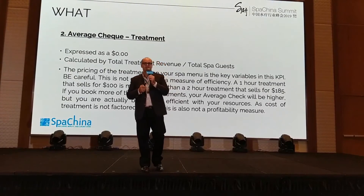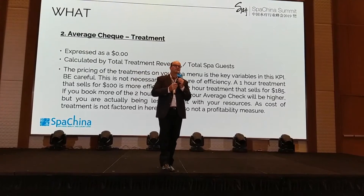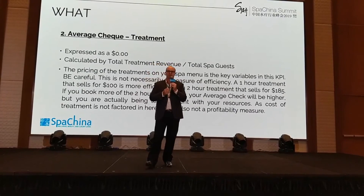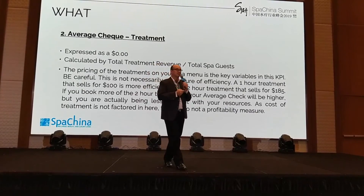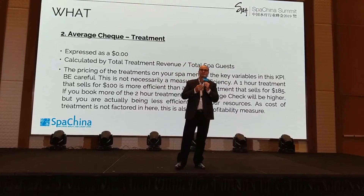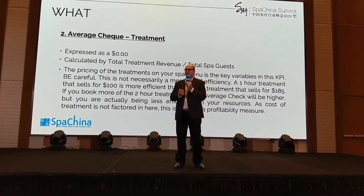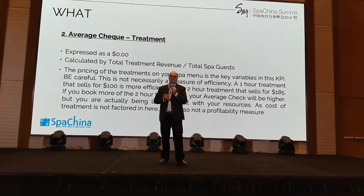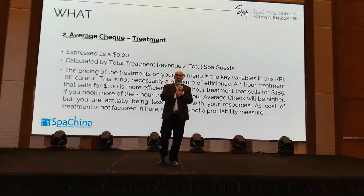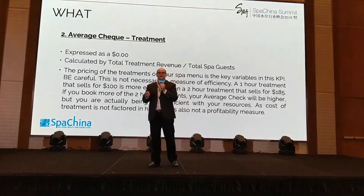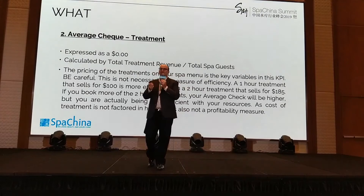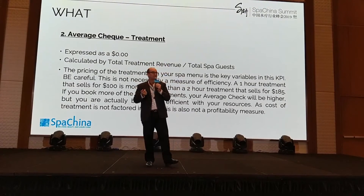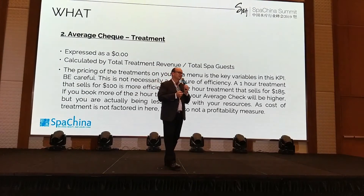The average check is another metric we look at a lot in spa. Hotel spas especially talk about capture rate and average check as their key metrics. The problem with average check, though, is that it's really just a factor of pricing on the treatment menu — it's certainly not a measure of efficiency or profitability. If you're selling a one-hour treatment at $100 and a two-hour package for $185, per hour you're making less money on the $185 treatment, but your average check is higher. So it can be very misleading as a KPI.